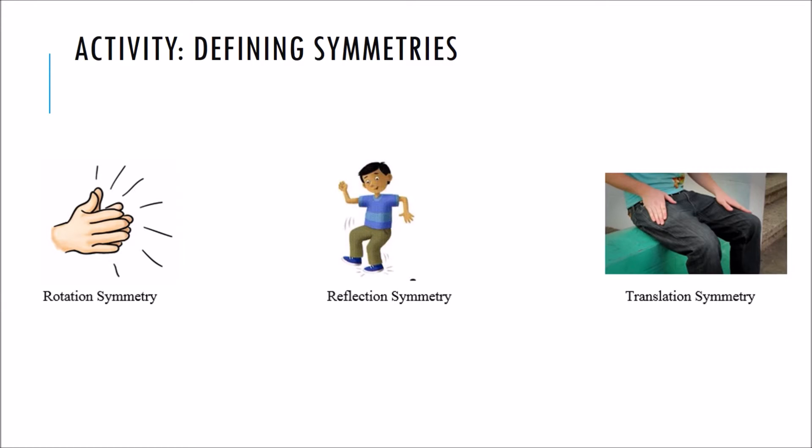So now we're going to do another activity where you will be watching a Chinese dance video and in the video, you'll notice different types of symmetries. So whenever you see a rotation symmetry, you will clap your hands. When you see a reflection symmetry, you will stomp your feet. And when there is a translation symmetry, you will hit your thighs.